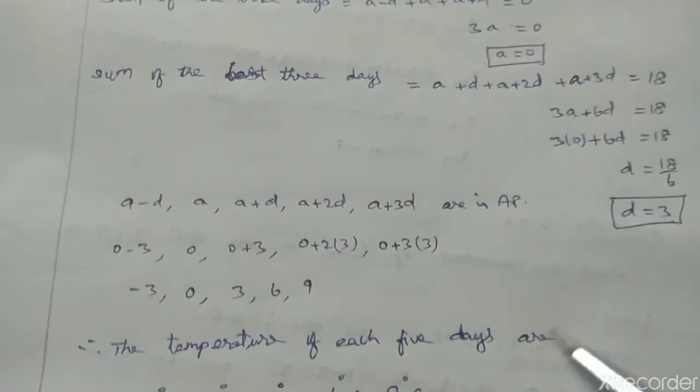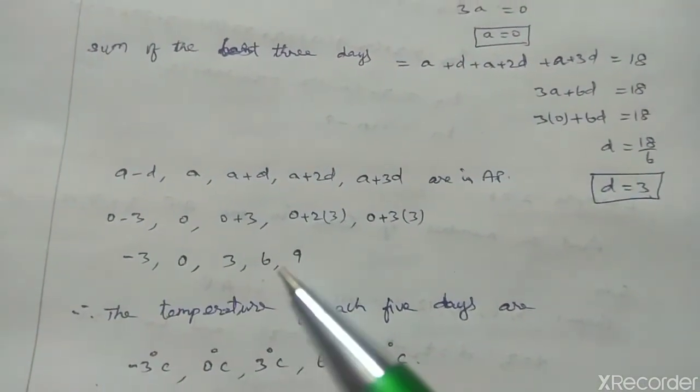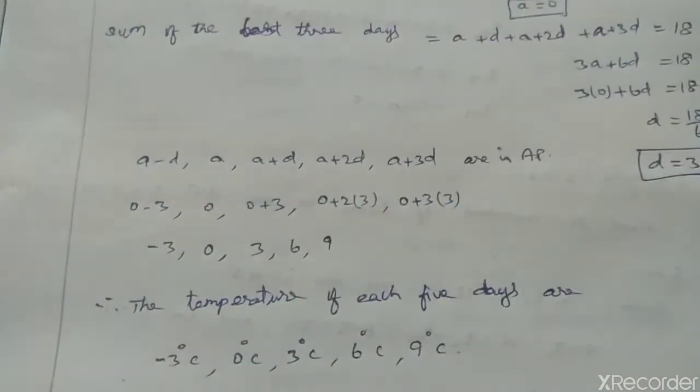Therefore, the temperature of each 5 days are minus 3 degree Celsius, 0 degree Celsius, 3 degree Celsius, 6 degree Celsius and 9 degree Celsius.